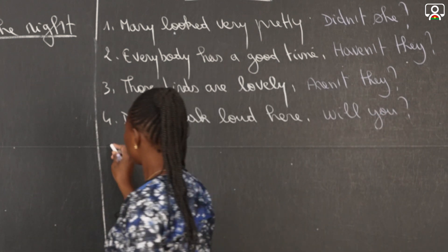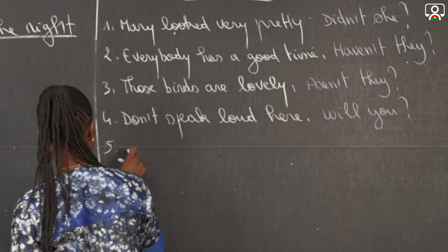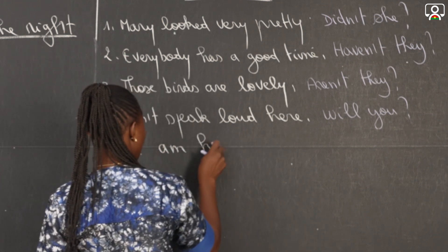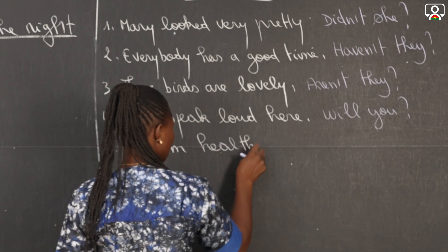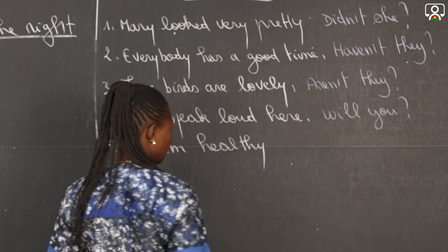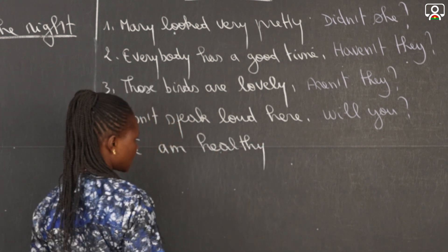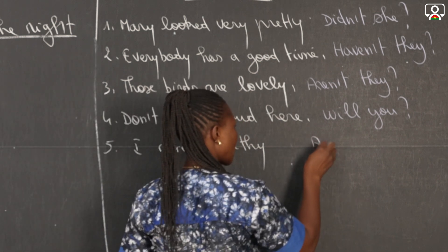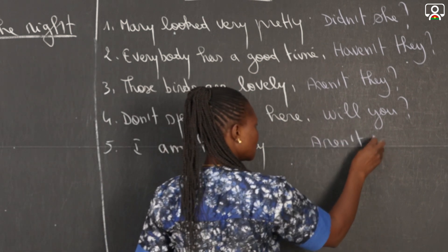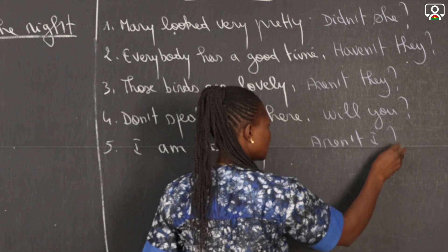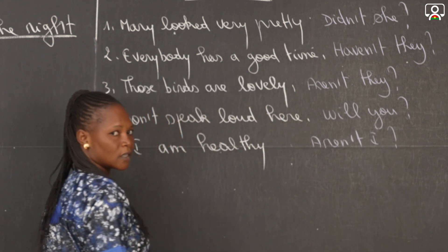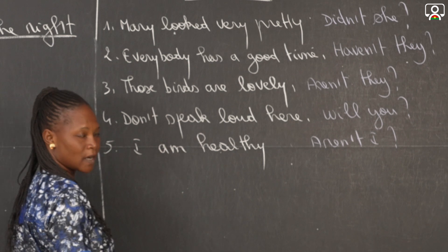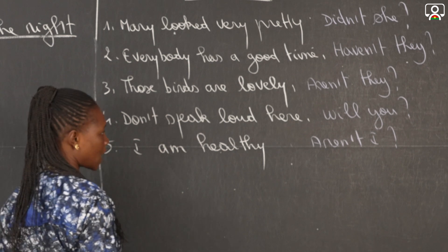Number five: I'm healthy. It is a positive statement, so the tag is going to be 'aren't I'. The contracted form of 'am not' is 'aren't', so 'aren't I'.